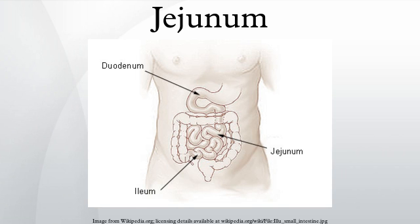The geodunum and the ileum are suspended by misentery which gives the bowel great mobility within the abdomen. It also contains circular and longitudinal smooth muscle which helps to move food along by a process known as peristalsis.